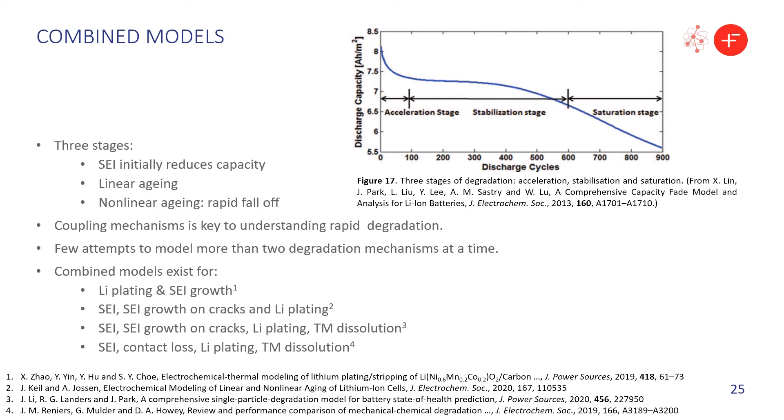There are three degradation stages in a cell's life. The initial drop-off in capacity, which is attributed to the initial SEI formation. This is followed by a period of linear degradation, but at some unpredictable point, this accelerates to non-linear degradation, and cells will often rapidly deteriorate and fail. It is only by combining the interactions of all mechanisms that we will be able to predict this onset, but currently only a few models exist which combine more than two.